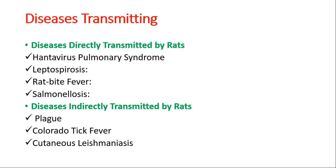Diseases directly transmitted by rats include hantavirus pulmonary syndrome, leptospirosis, rat-bite fever, and salmonellosis. Diseases indirectly transmitted by rats include plague, tick fever, and cutaneous leishmaniasis.